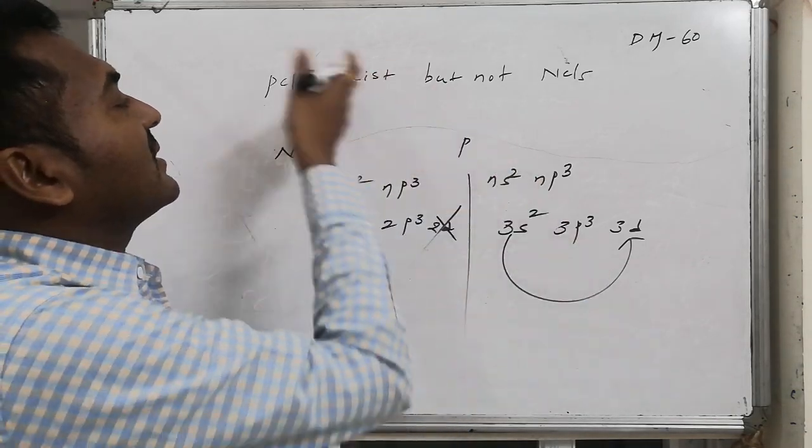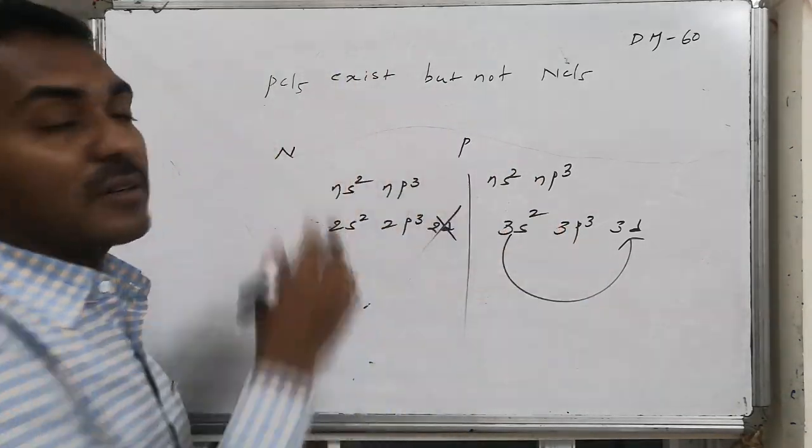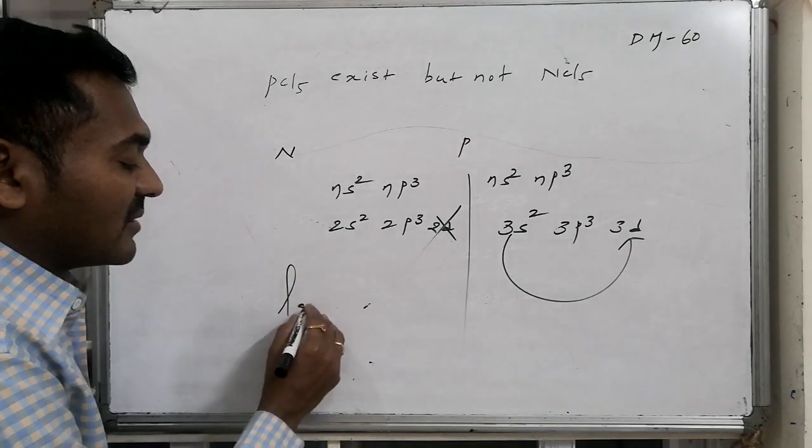Hence, it is existing. That is, PCl5 is existing but not NCl5 because of lack of the orbitals.